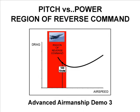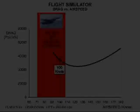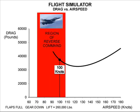This is Demonstration Number 3 from the Aviation Textbook, Advanced Airmanship, Book 1, Precision Flying. This demonstration examines pitch and power control in the region of reverse command, which is the normal operating region for jet fighters during carrier approaches.